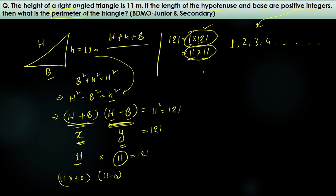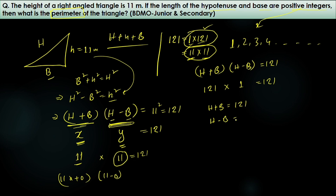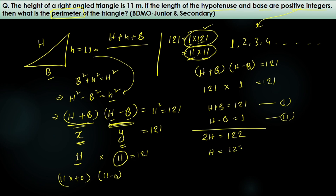So we set H + b = 121 and H − b = 1. Adding these two equations gives 2H = 122, so H = 122 ÷ 2 = 61. The hypotenuse is 61.